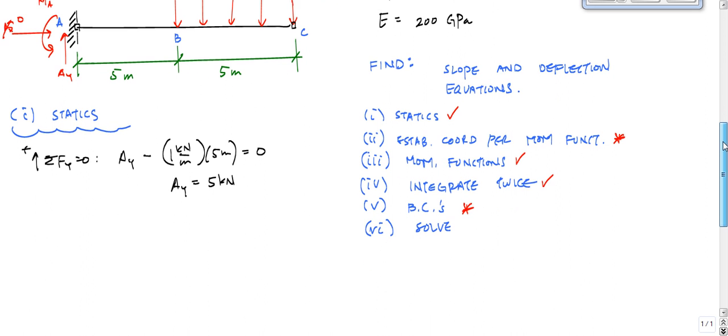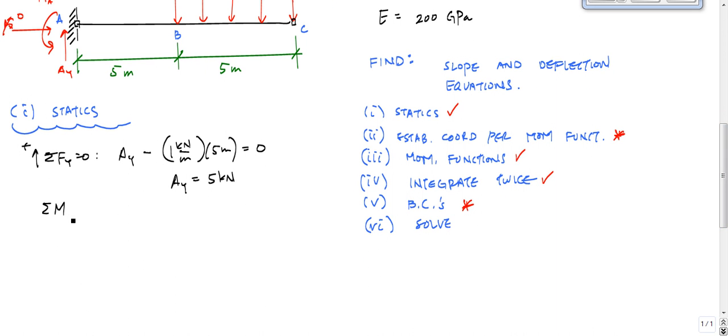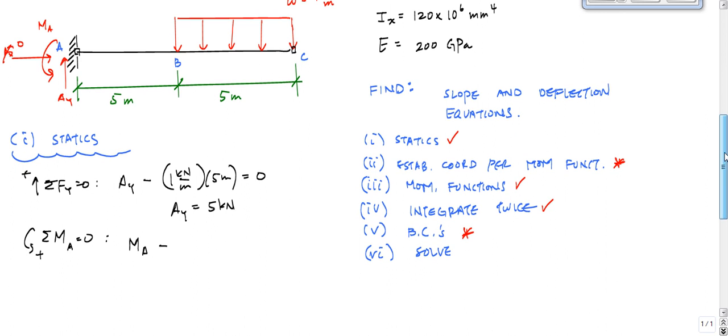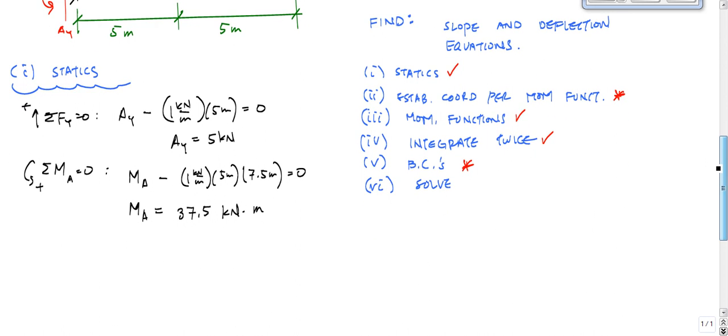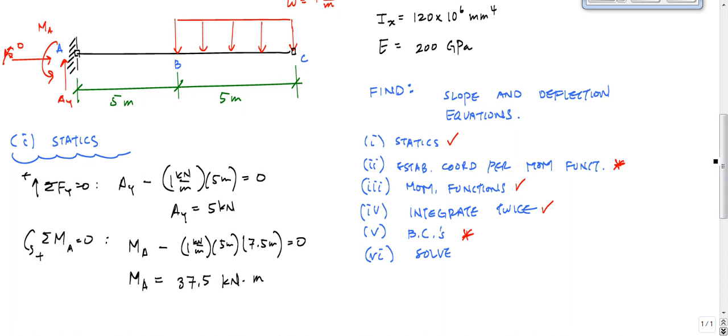And then the moment, sum of the moments about A equal to zero. And here this would tell me that MA minus one kilonewton per meter times five meters times the arm, which would be five plus 2.5, 7.5 meters is equal to zero. And MA is 37.5 kilonewton meters. All right, so double-check my work, but I think that's pretty good. And if you have questions about the statics, really you need to review some statics.